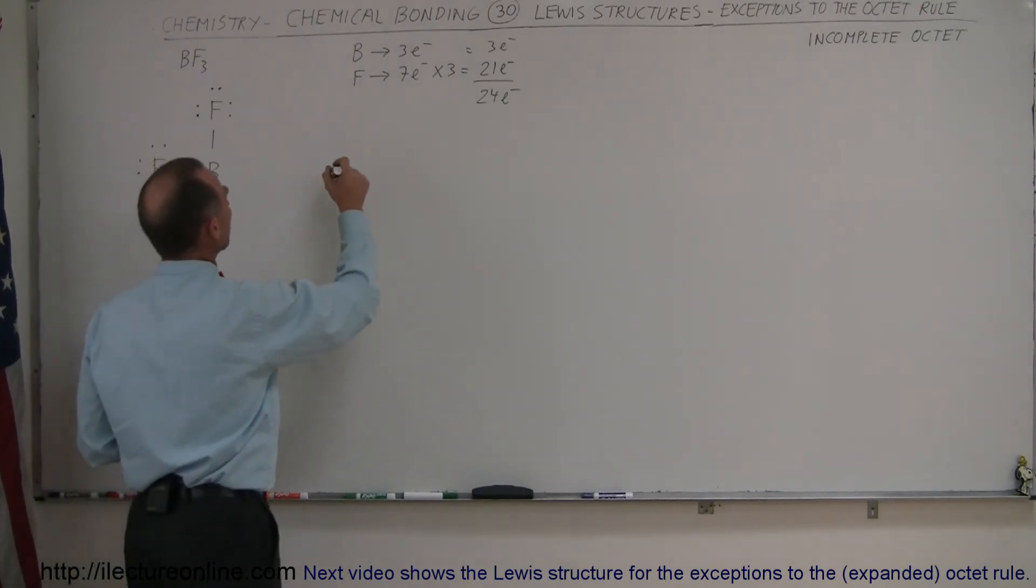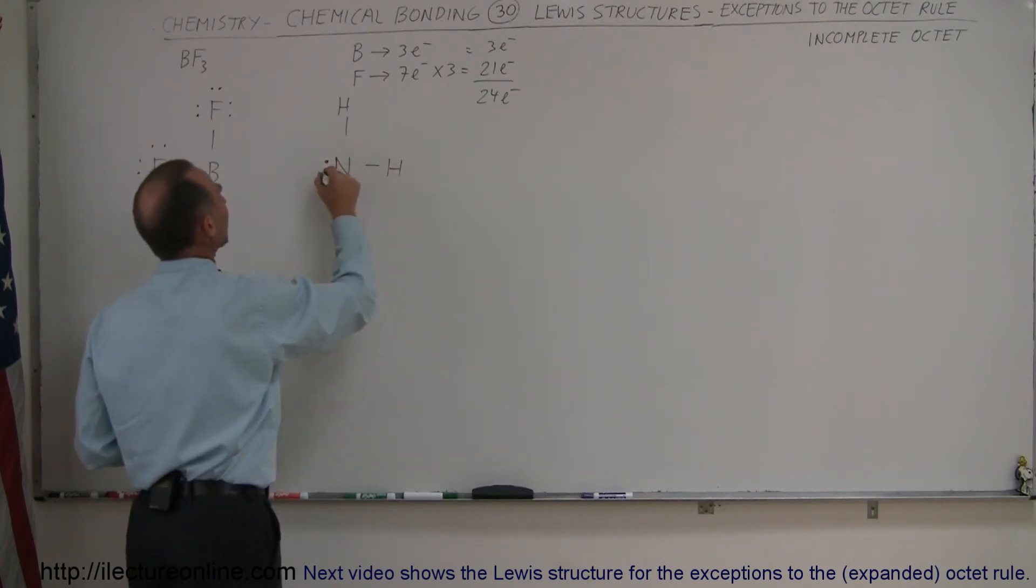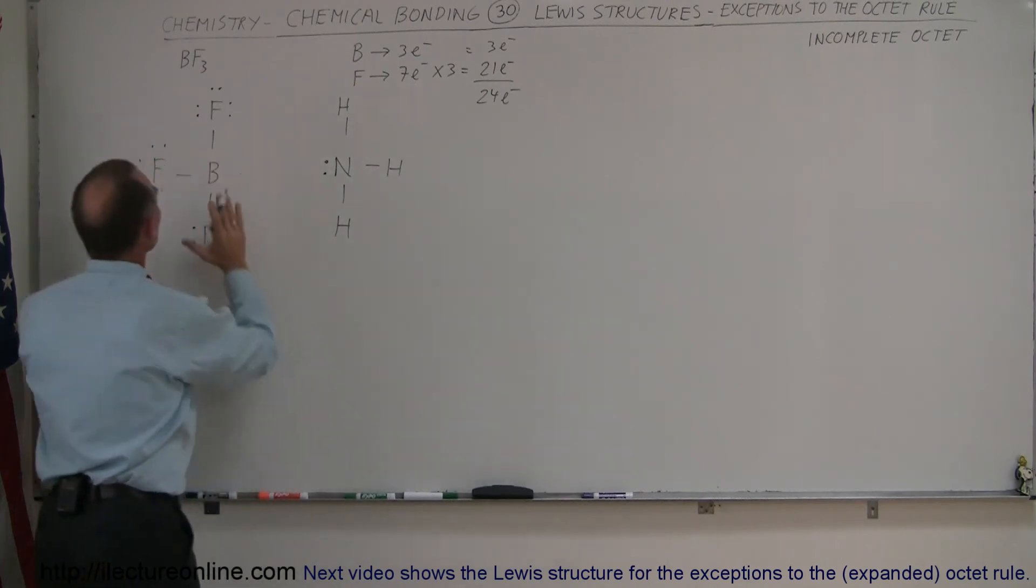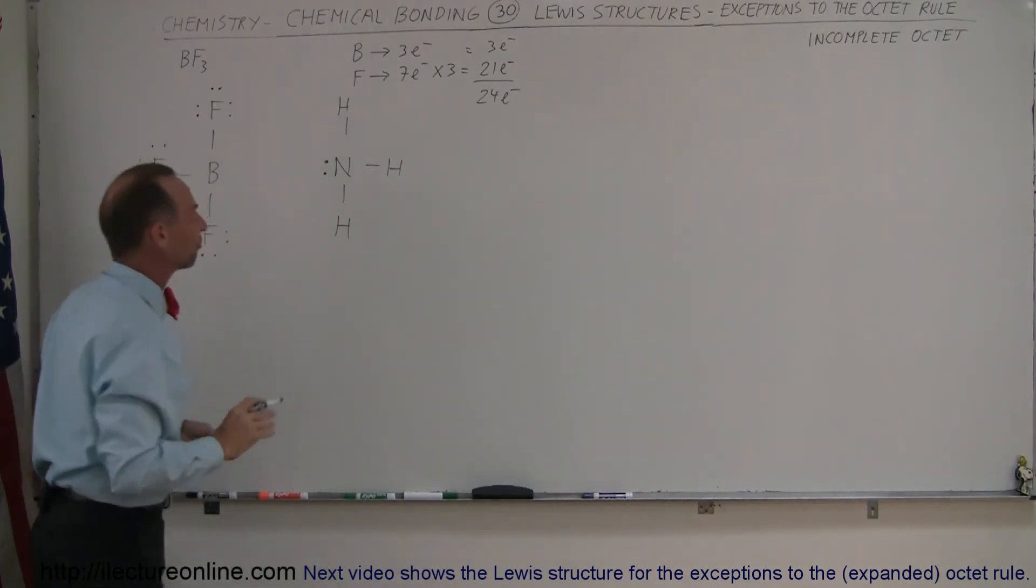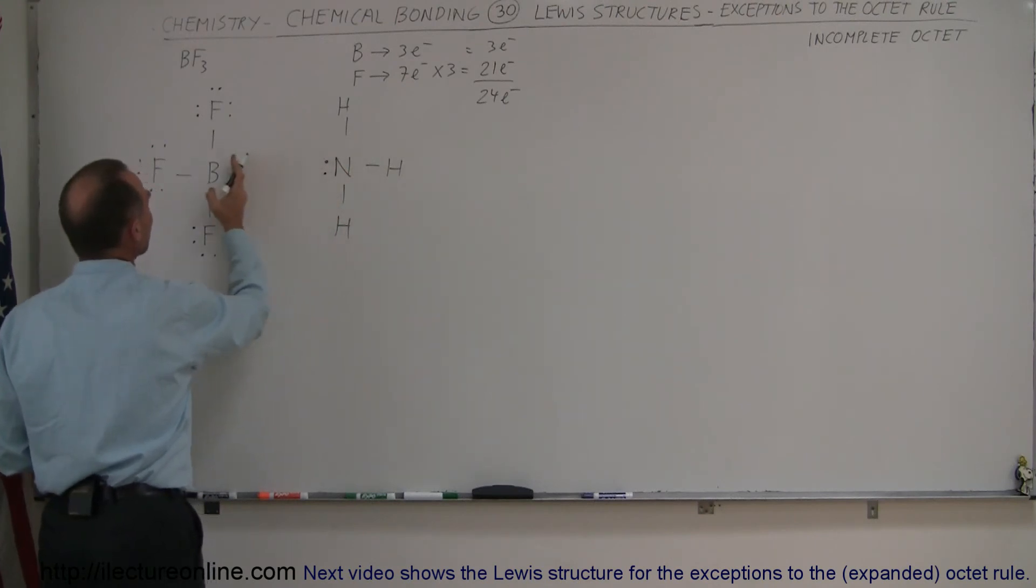Let's say we come in with ammonia, which is an N with three H's, three hydrogens, like this. Notice that in this case, we have two additional electrons here. This is the Lewis structure of ammonia. This is the Lewis structure of boron trifluoride. Notice that these two electrons can be drawn in and become